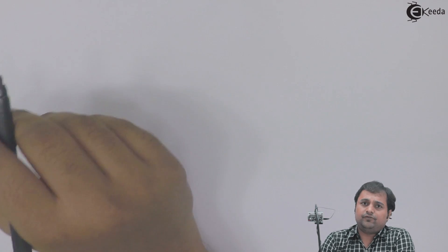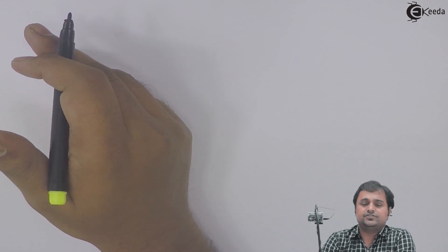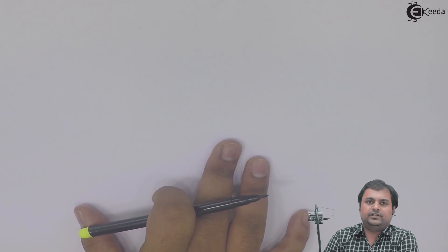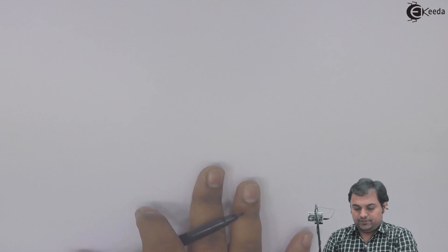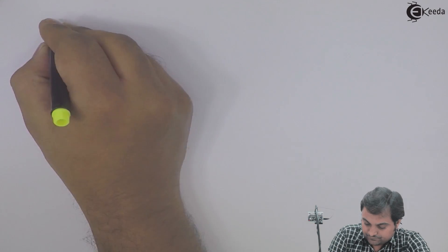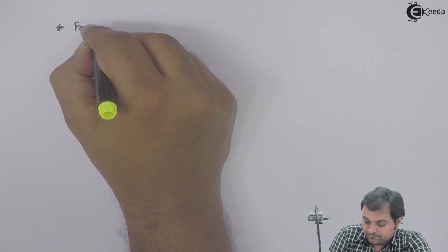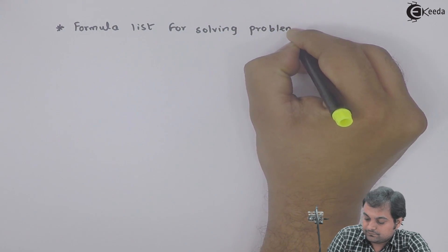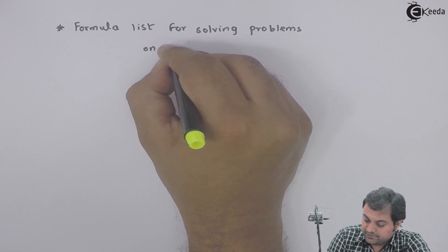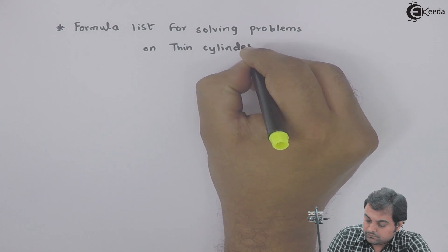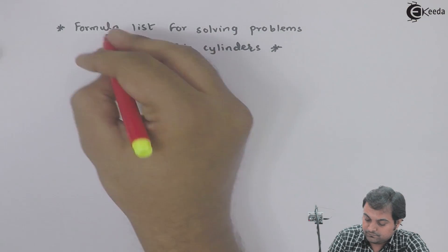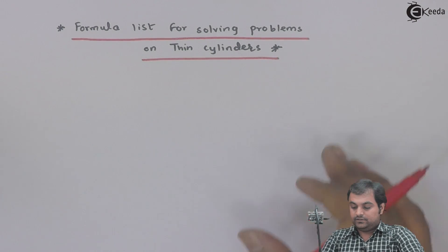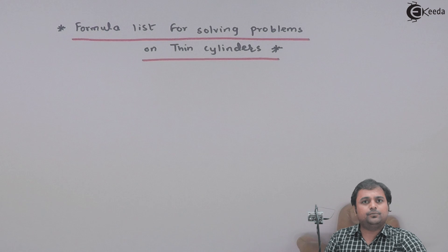Let me give a list of formulas for solving problems on thin cylindrical shells. I would be writing a number of formulae, and based on that we are going to solve problems on thin cylinders. So the topic is: formula list for solving problems on thin cylinders. I would be writing some formulas which are very important from the subject point of view as well as for solving the problems.